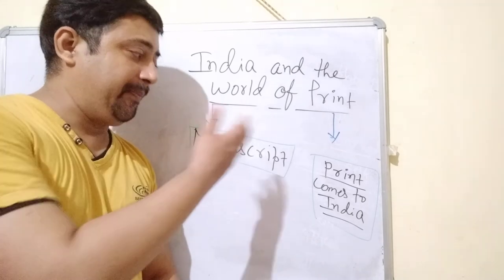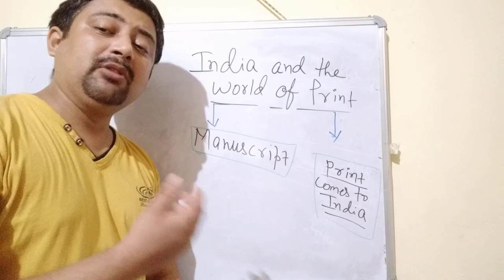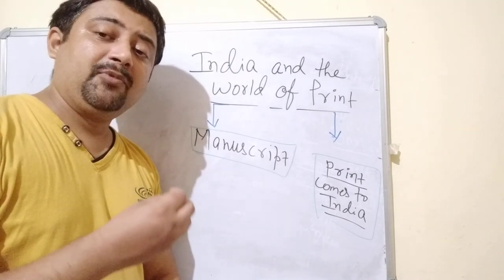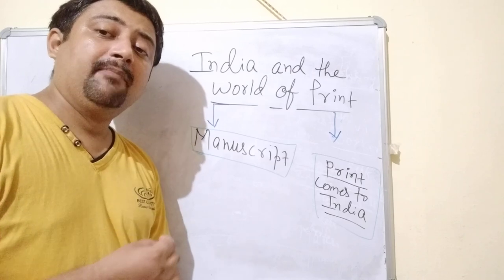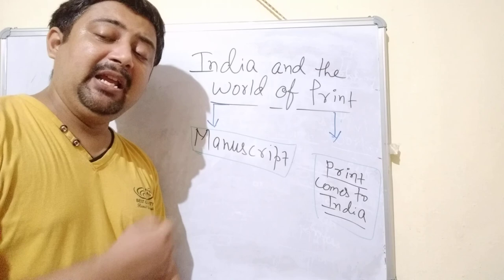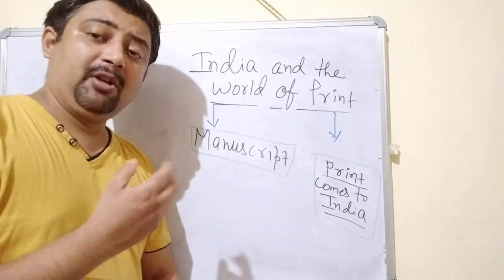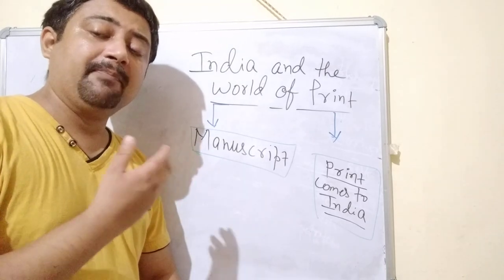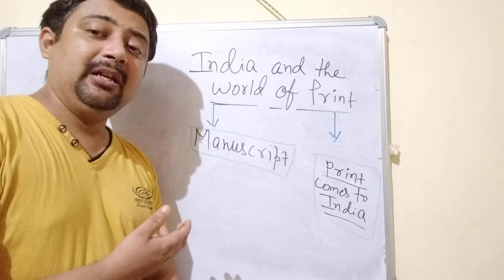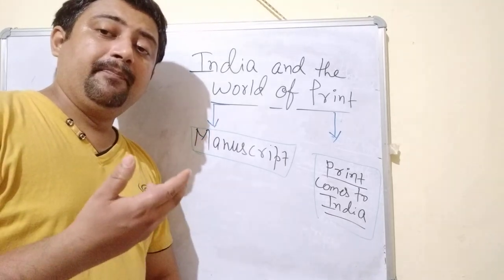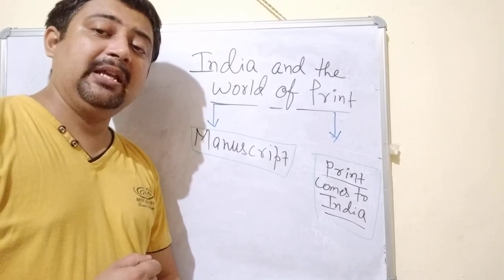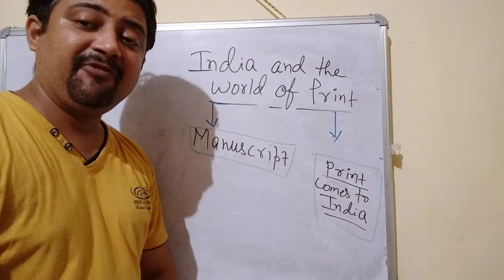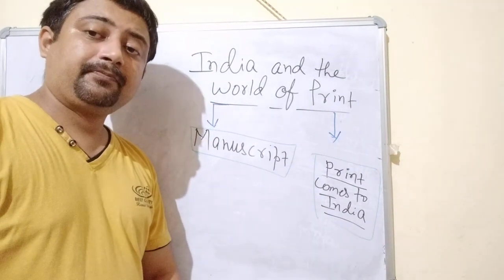The next sub-topic is: print comes to India. We need to understand that print came to India with the help of Portuguese missionaries. They came towards India and print arrived first of all in Goa, because the Portuguese settlements were there. So basically, the printing press came to India with Portuguese missionaries in Goa. Thereafter, printing was done in various languages, particularly in Konkani language, and over time many books were printed in different Indian languages. This is how print became much more popular.